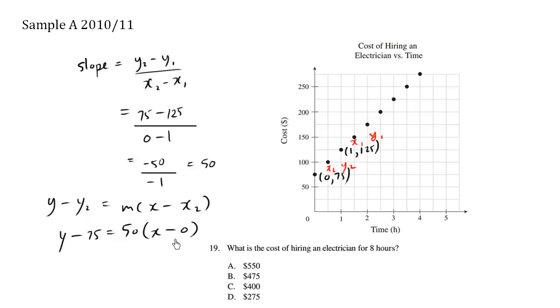x minus x2, which is 0. So we have a line equation. Y is equal to something plus 75. We're just adding 75 to both sides. x minus 0 is x, and 50 times x is 50x. So here is our general line equation.